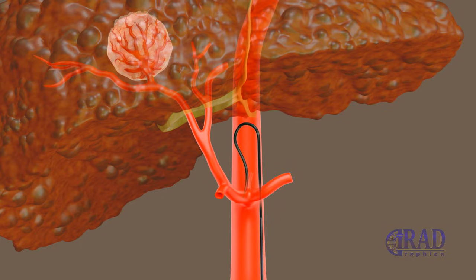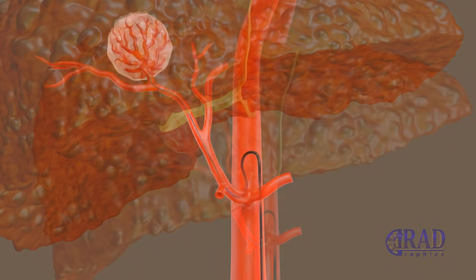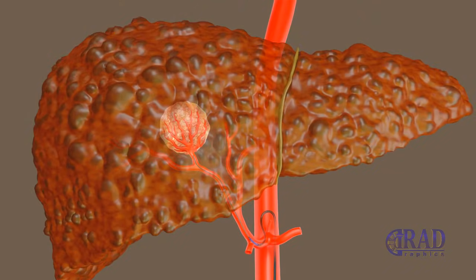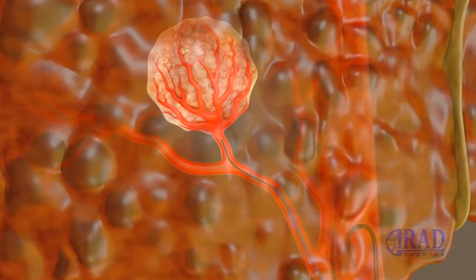Subsequently, the wire is exchanged for a combination of microcatheter and microwire, which is advanced through the curved catheter to select the hepatic artery and then the branches supplying the target liver tumor. Once the target artery is selected, the tumor can be embolized by different materials based on the patient's clinical situation and planned treatment.